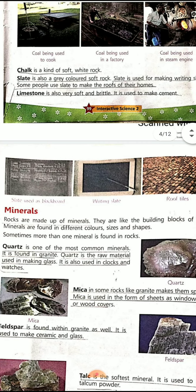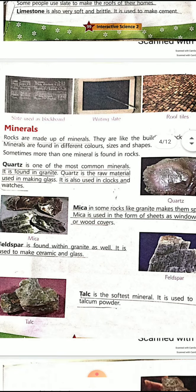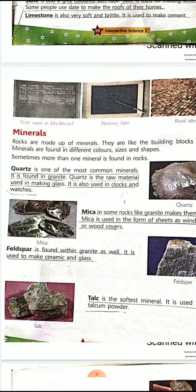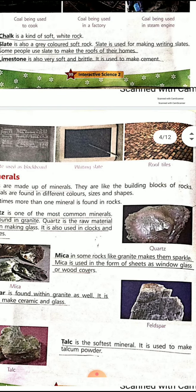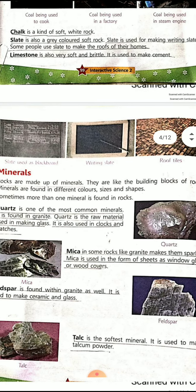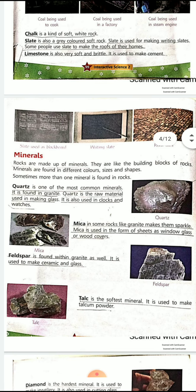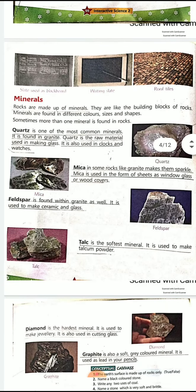Now let's read about minerals. What are minerals? Rocks are made up of minerals — they are like the building blocks of rocks. Minerals are found in different colors, sizes, and shapes, just as rocks are. Sometimes more than one mineral is found in a single rock.